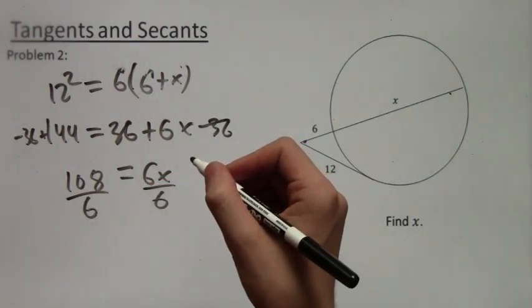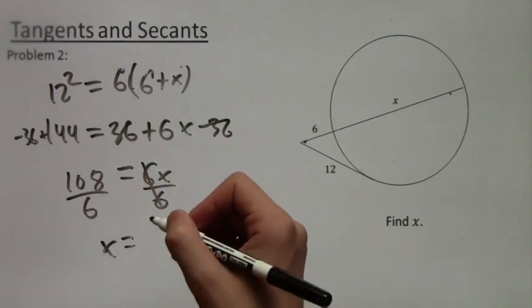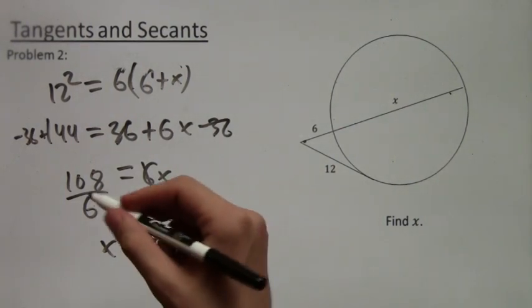We just divide by 6, and we get x equals 108 over 6. And 108 over 6 is actually just 18. So x equals 18.